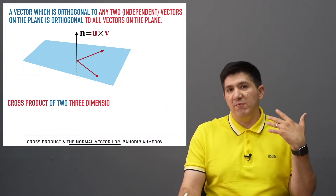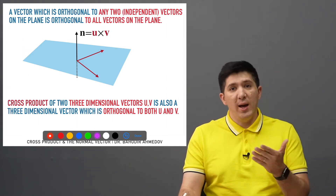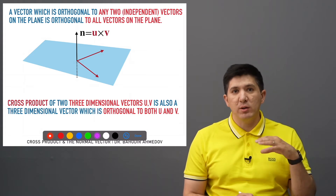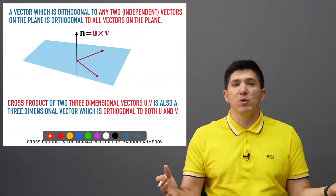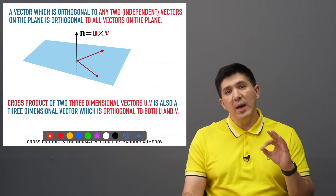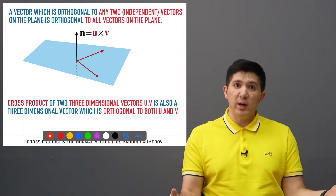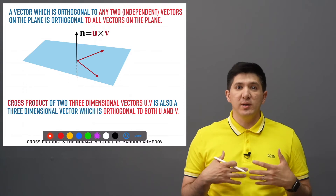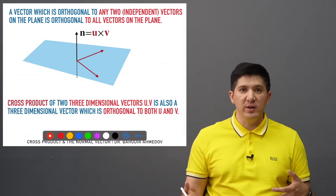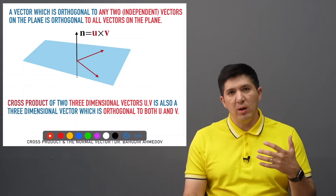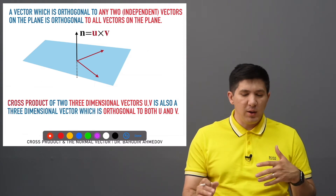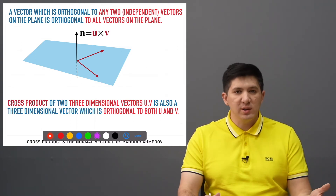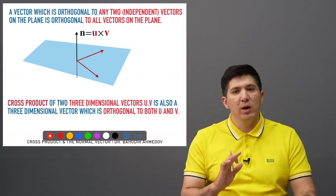As a result of the cross product of u and v, we obtain another vector which is orthogonal to both u and v at the same time. Please note that the cross product works only for three-dimensional vectors — it doesn't work for 2D or 4D. The dot product exists for any dimensional vectors, but the cross product exists only for 3D vectors. We will discuss the formula's derivation in other video lectures.